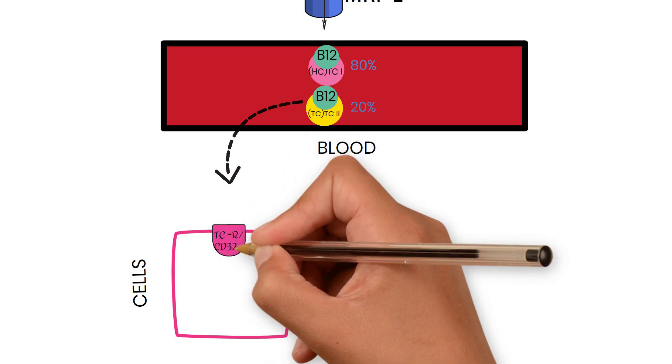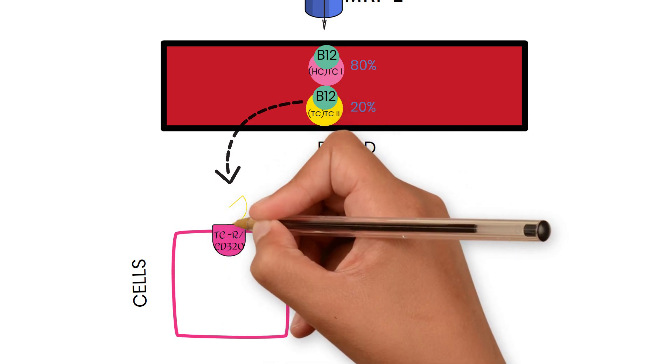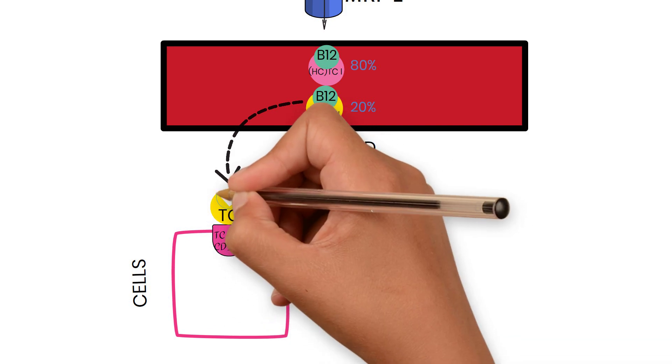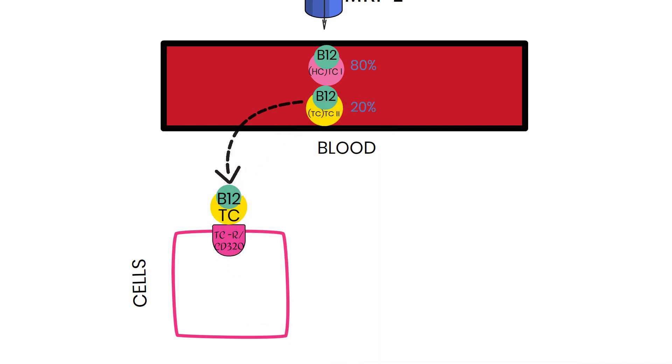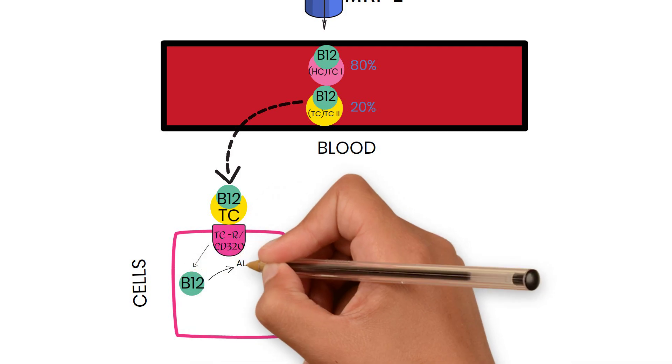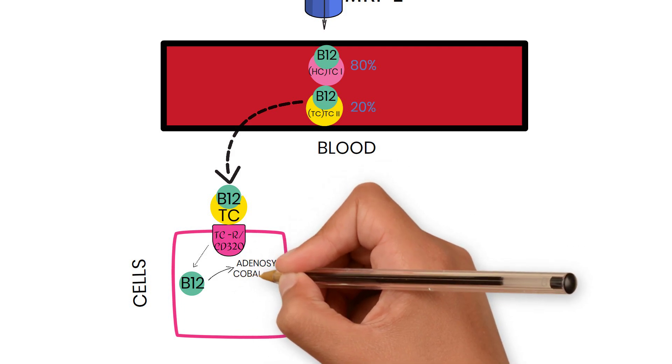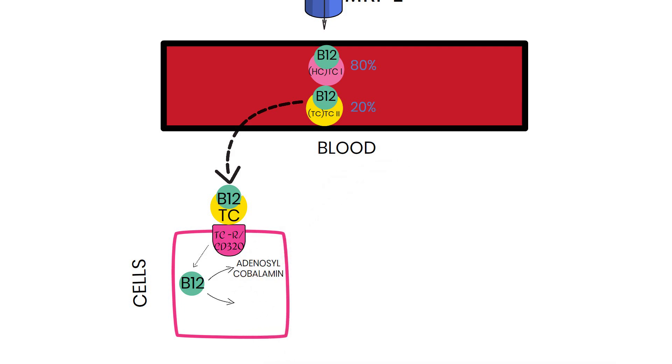This B12-transcobalamin complex binds to transcobalamin receptor, a protein called CD320. Once inside, B12 is released, transcobalamin is degraded, and B12 can be converted to adenosylcobalamin and methylcobalamin. These two cobalamins act as cofactors for B12-dependent reactions.